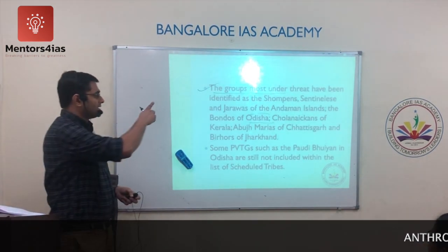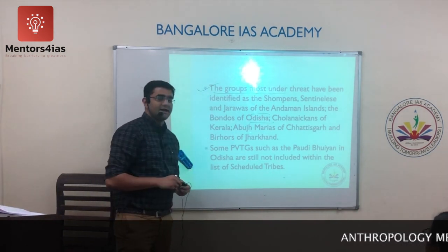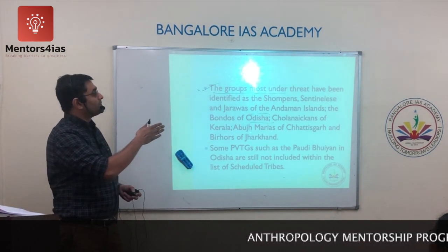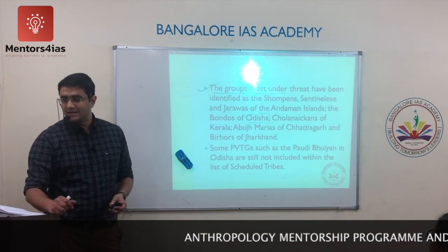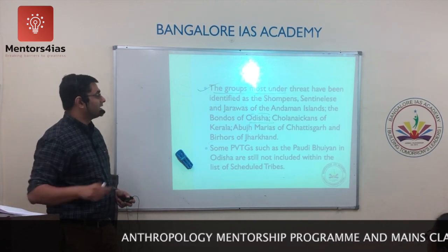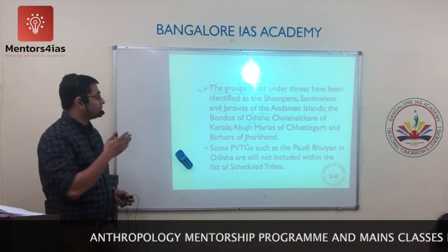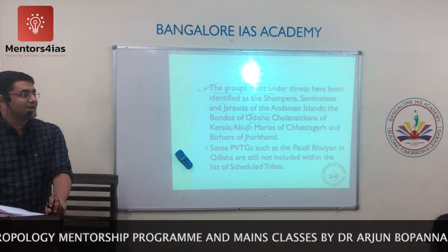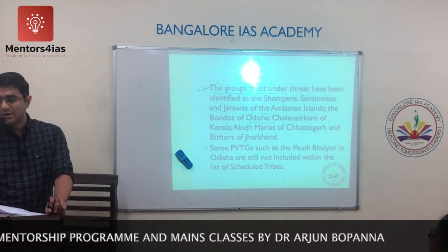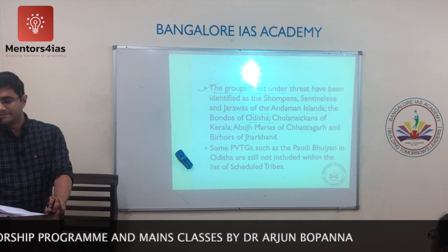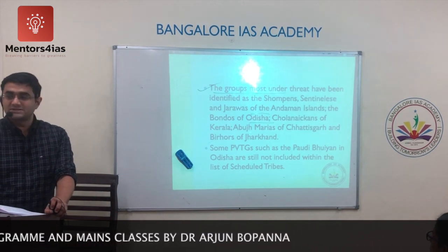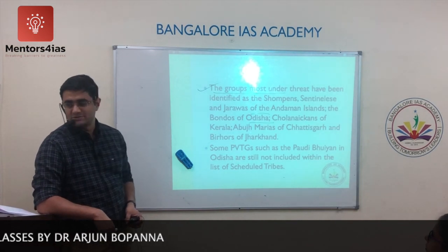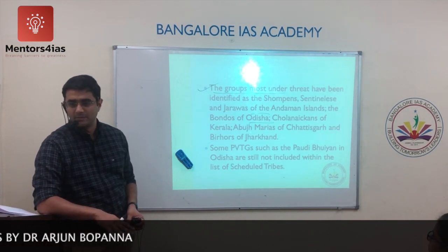Among the most important identified PVTG groups are the Chom-penhs, the Sentinelese, and the Jarvas of Andaman and Nicobar Island, as well as the Bondos of Odisha. These are among the groups identified in different states that are extremely vulnerable. Some of these tribes have not even been included under the Scheduled Tribes, which is itself a significant problem.